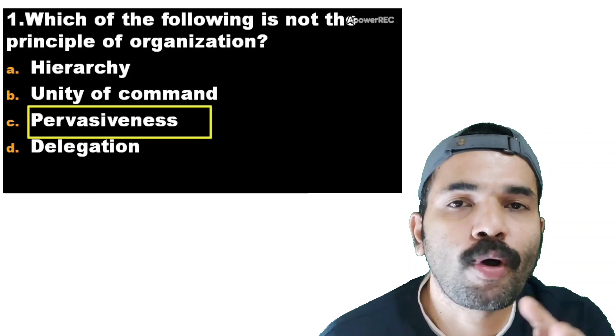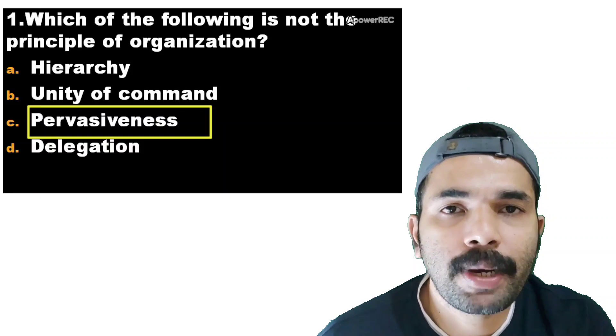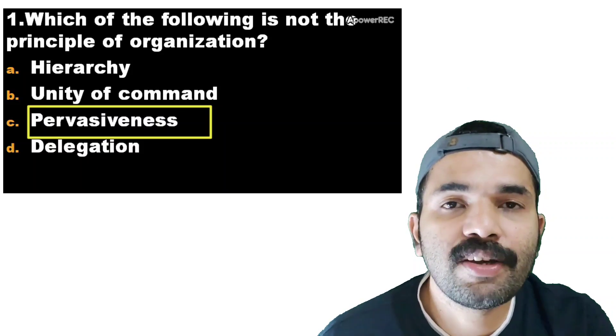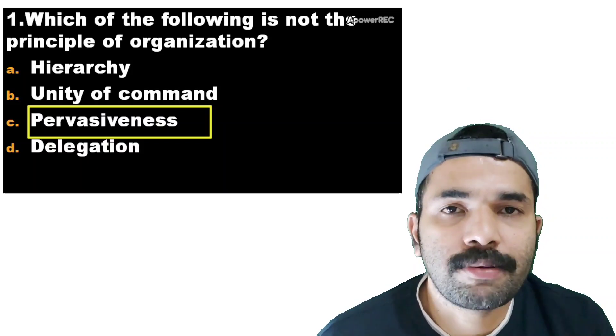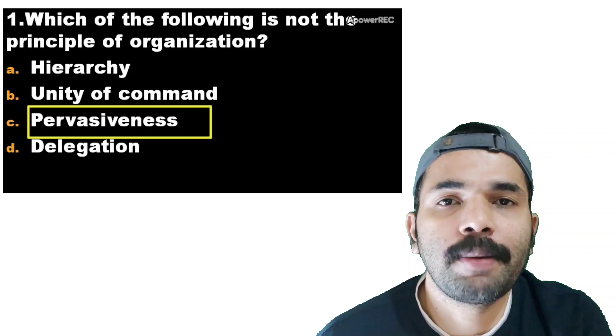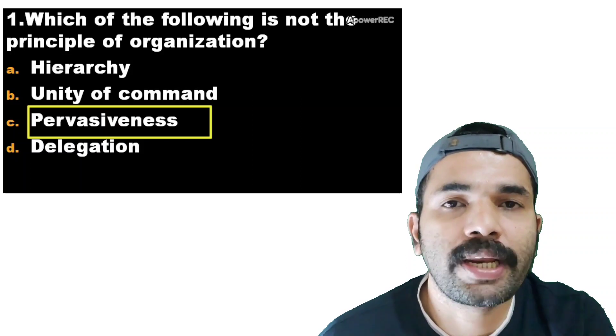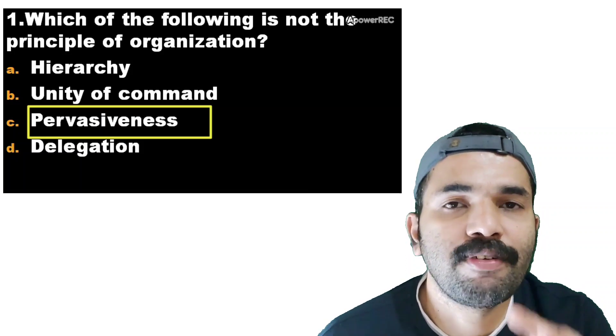The principle of organization was given by Henry Fayol in 1947. Henry Fayol gave the principles of organization. That is why pervasiveness is not the principle of organization.